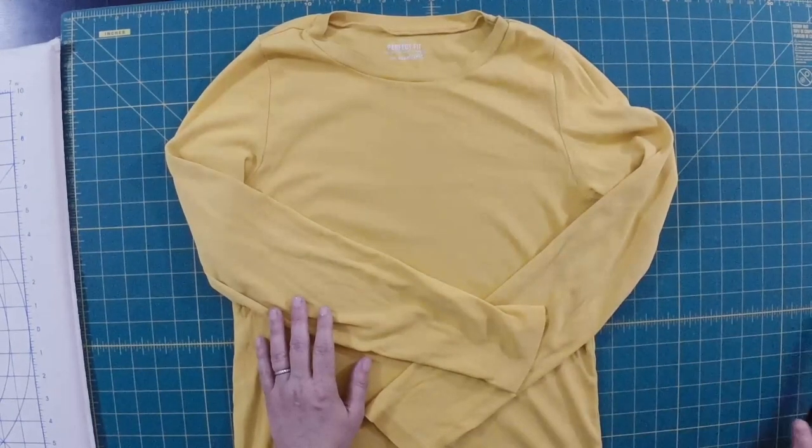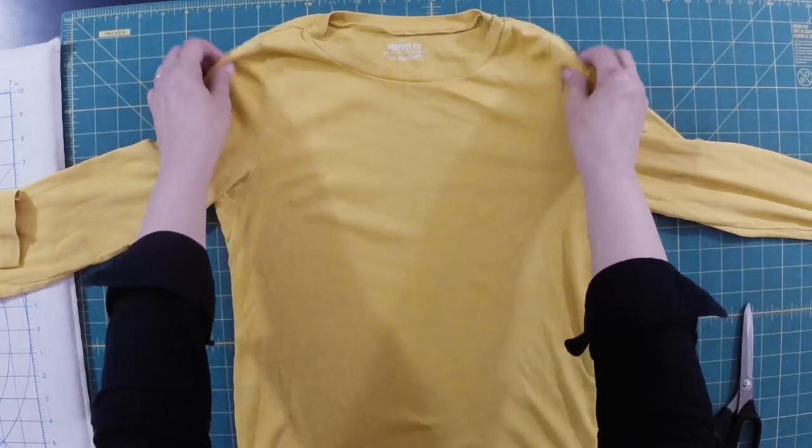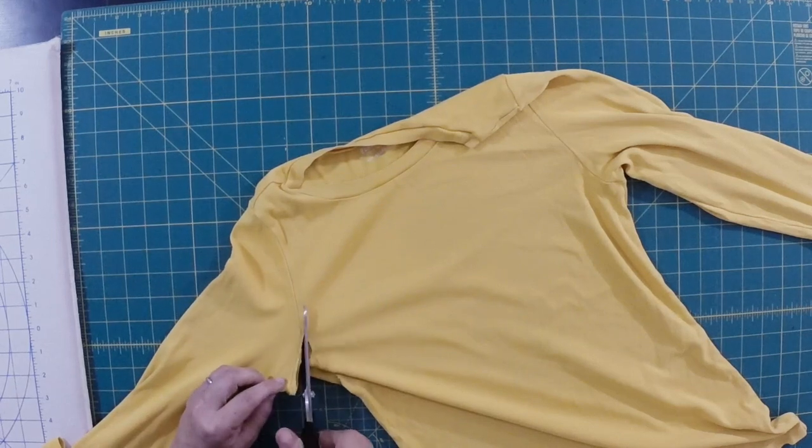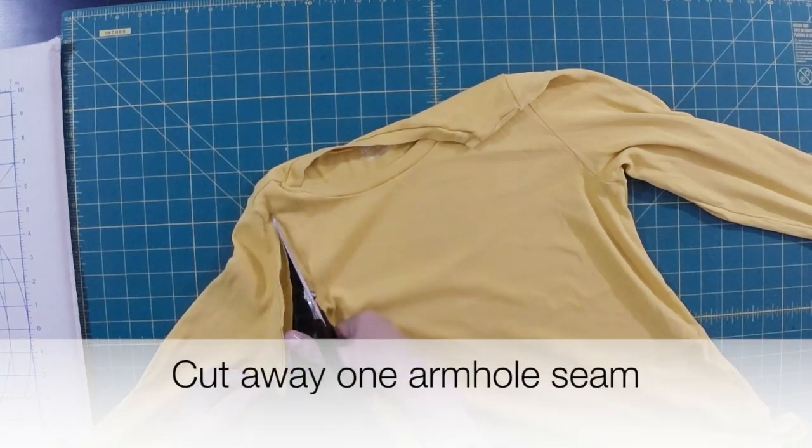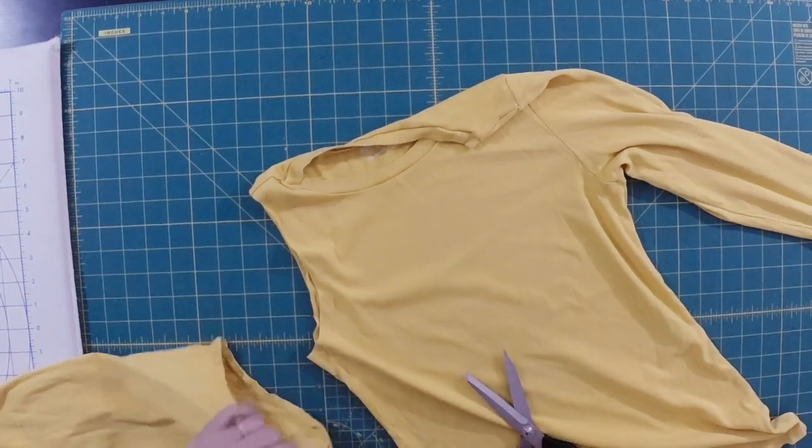So to cut up a t-shirt you need your fabric scissors and what I do, this is just a cotton long sleeve t-shirt, pretty simple to cut up. So I start at the seams, at the armhole seams, and I'm just trimming actually through both layers because these scissors are super sharp.